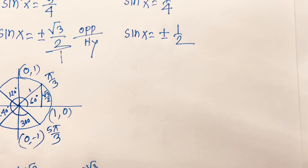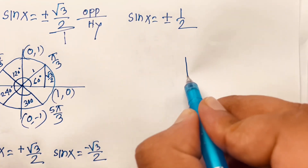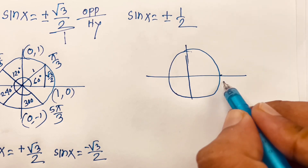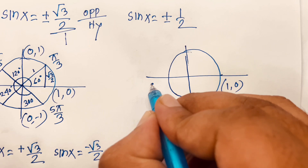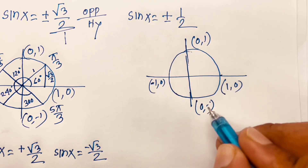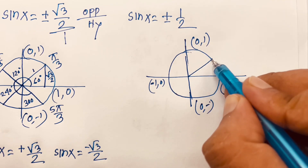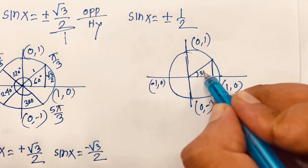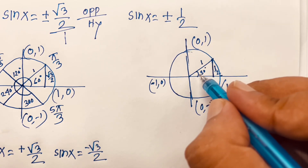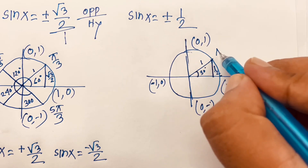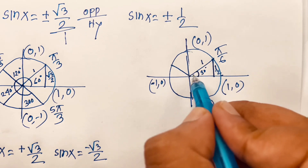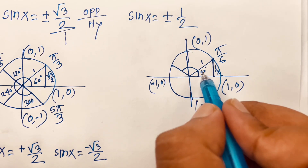For the other case, sin x equals plus or minus half. Again using the unit circle, with points 1,0, minus 1,0, 0,1, and 0 minus 1. The angle here is 30 degrees because the opposite is half and hypotenuse is 1. So this is 30 degrees, which in radian is pi over 6. And the other case is 180 degrees minus 30, which is 150 degrees.